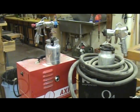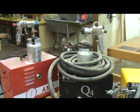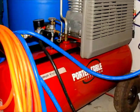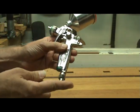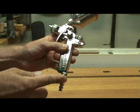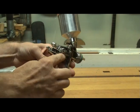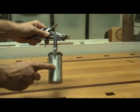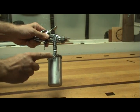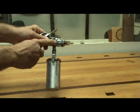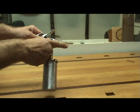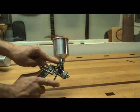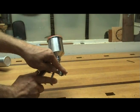HVLP guns can use two different air sources: a turbine or a conventional air compressor. If it uses a compressor it is known as a conversion gun because it converts the high air pressure from the compressor to a lower pressure as it exits the tip of the gun. There are basically two designs for these spray guns: siphon feed where the cup is on the bottom and the material is fed up into the gun with pressure, and gravity feed where the cup is on the top of the gun and gravity is used to feed the material into the gun.